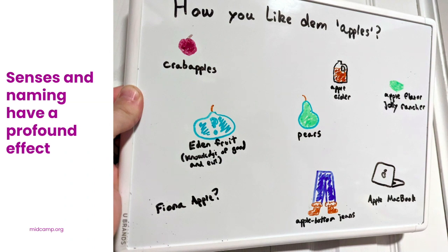Crab apples are fruit from trees of the same species as regular apples — they meet the intentional definition of apple, but we all know the difference. Apple cider smells and tastes like apples but is a liquid that otherwise shares no properties of an apple. Same with a Jolly Rancher. The fruit of knowledge from the Garden of Eden is often thought to be an apple, though never explicitly stated. Pears are apple cousins — they want to be apples so bad. Fiona Apple's last name is Apple; Apple Bottom Jeans might share some aesthetic properties; MacBooks have a picture of an apple. So it's all a matter of degrees — some things don't walk or quack like an apple but aren't as far from apple-itude as you might initially suspect.